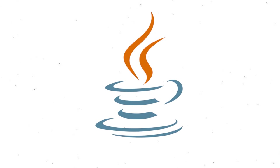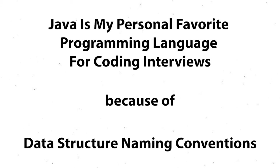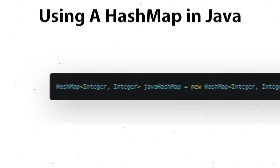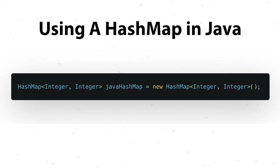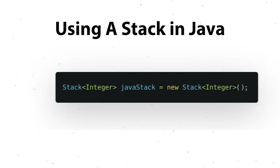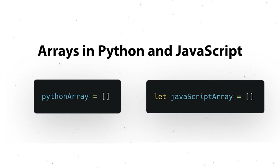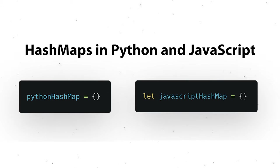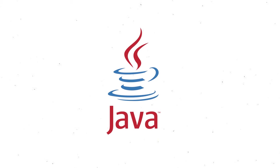I like Java because to code out the data structures, you write the actual name of the data structure. To declare a hash map in Java, you write the word 'HashMap'. To declare a stack, you write the word 'stack'. Whereas in Python and JavaScript, you might use brackets to represent an array or curly braces to represent a hash map, which gets a little confusing.